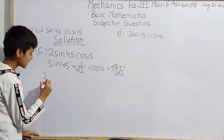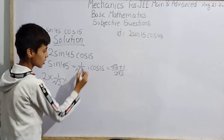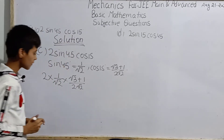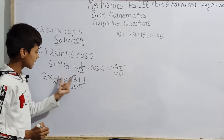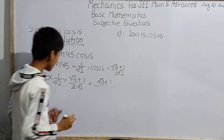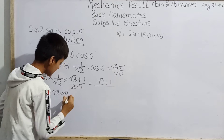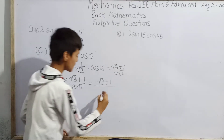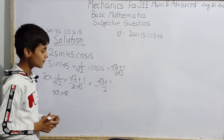Now we write 2 × sin45° × cos15°, substituting: 2 × (1/√2) × (√3 + 1)/(2√2). The 2's cancel, giving us (√3 + 1) divided by (√2 × √2). Since √2 × √2 = √4 = 2, we get (√3 + 1)/2.